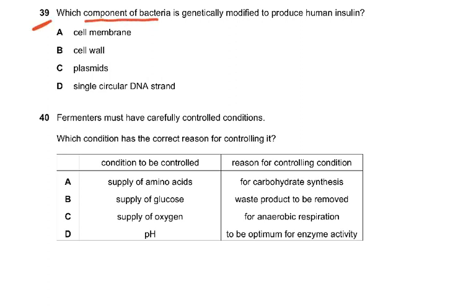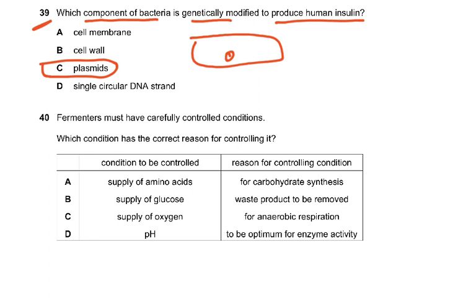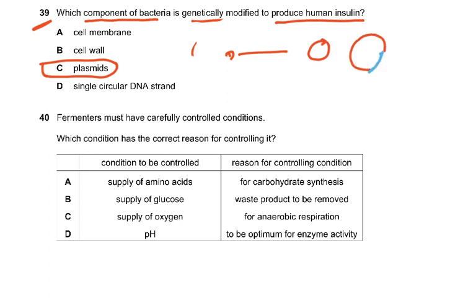Question 39: Which component of bacteria is genetically modified to produce human insulin? The options are cell membrane, cell wall, plasmid, and single circular DNA strand. It is the plasmids that are taken out. You break up the bacteria, take out the plasmid, cut it, insert the human insulin gene, reconnect it using an enzyme to form recombinant DNA, then put it into new bacteria and culture them. The answer is C — plasmids, which are small DNA circles that can be easily taken out and put back.